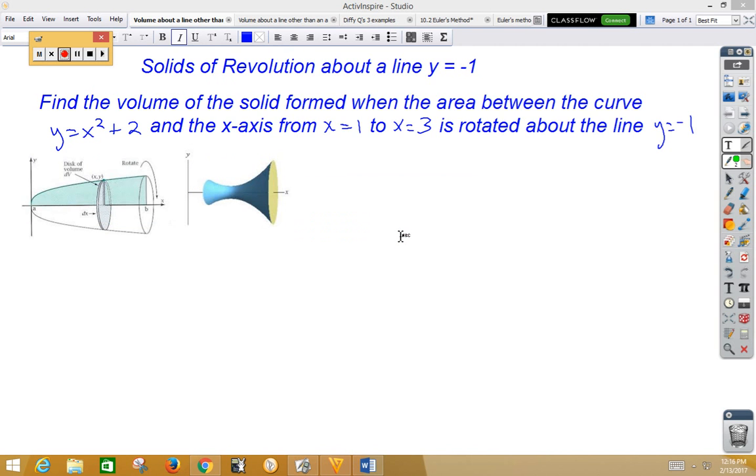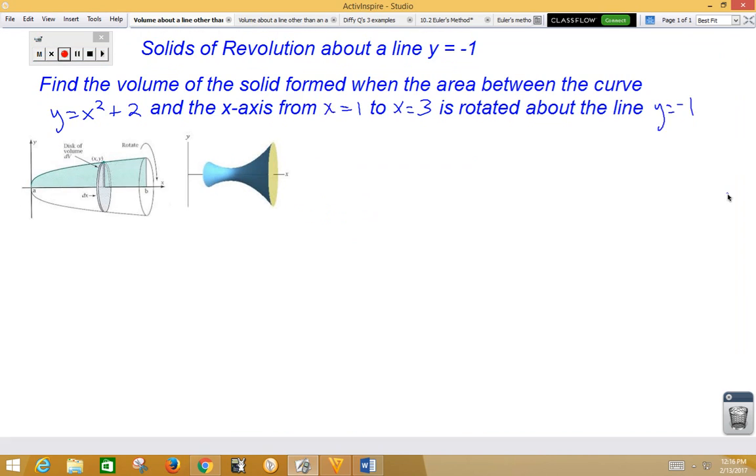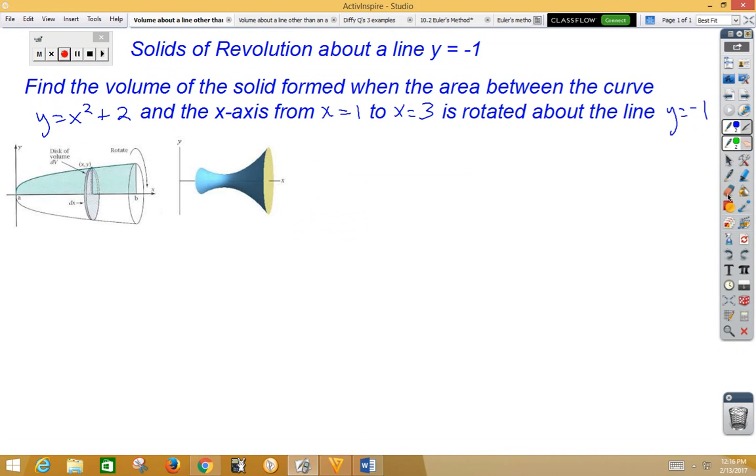In this video, we're going to do a solid of revolution, a volume about an axis. Let's think about our curve. Our curve here is the same parabola that we've been working with, and we're going from x = 1 to x = 3, and we would like to revolve this about the line y = -1.